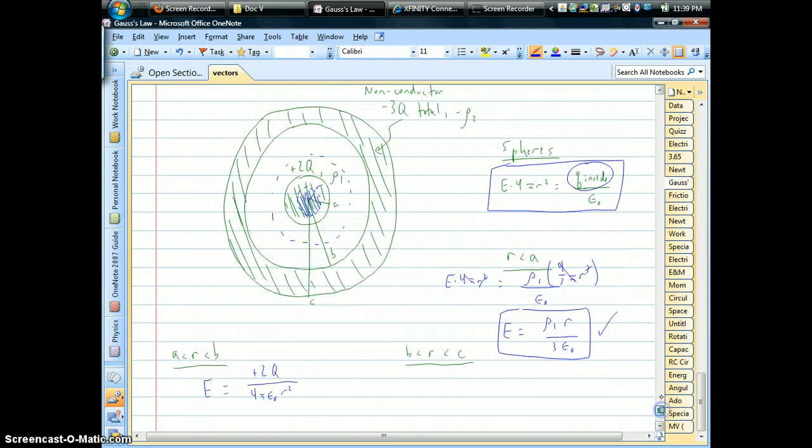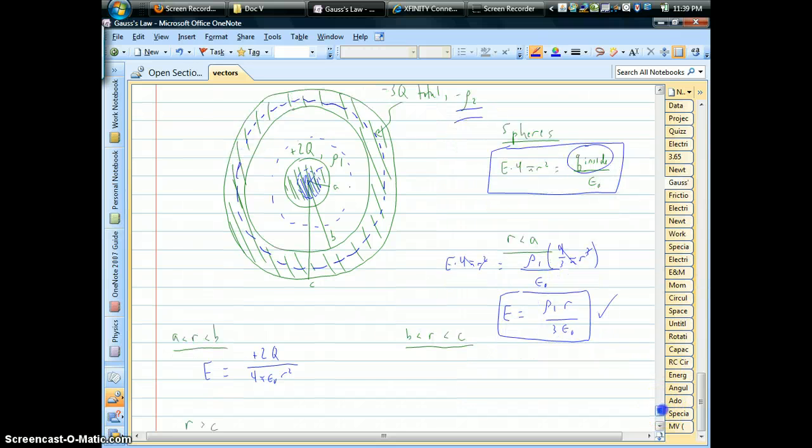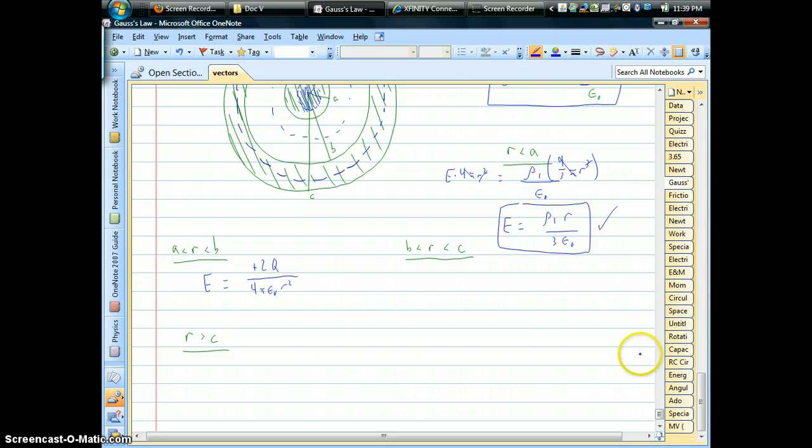But then one of the trickier parts occurs when you go inside the shell. This is the part that will cause a lot of students some headaches the first few times they see something like this. Okay, so now what do we do? It's a non-conductor. It has another density there. Let's see what Gauss's Law gives us.